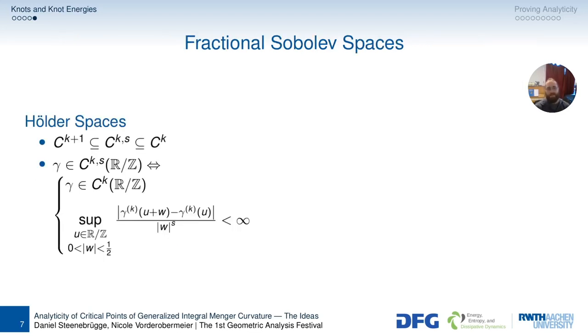And lastly, before we get into it, we're going to need fractional Sobolev spaces. And if you haven't heard of them, they might sound quite scary, but the idea is quite simple. So you probably know Hölder spaces, which are kind of interpolating between Ck plus 1 and Ck. And they are the generalization of Lipschitz spaces. So we say that gamma is in Cks, if and only if gamma is in Ck, and the semi-norm is bounded, and we have this difference, kth derivative of gamma at point u plus w minus kth derivative at point u divided by w to the s. And w can be between 0 and 1 half, or well, between minus 1 half and 1 half, but should not be 0.